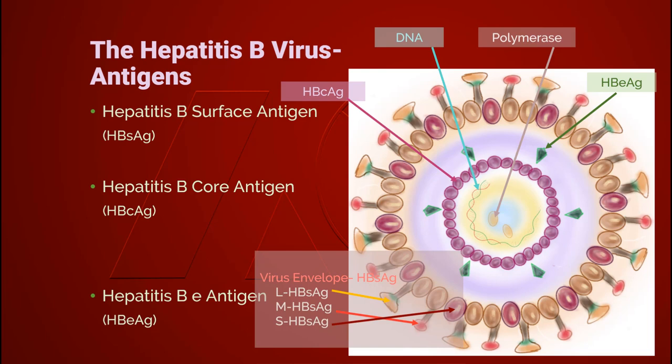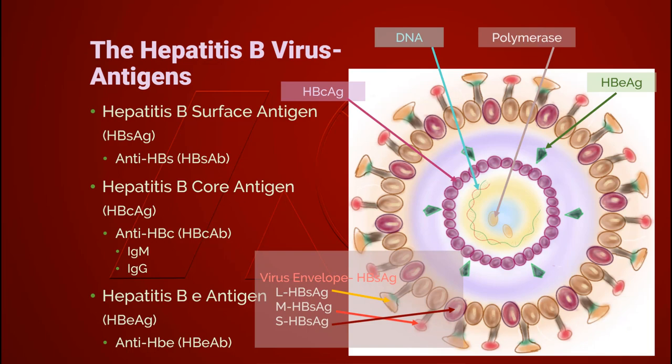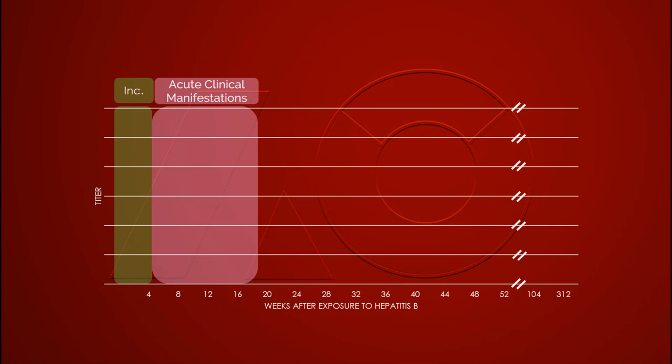Antibodies produced by the immune response against hepatitis B virus each target a specific antigen. Anti-hepatitis B surface antibody responds to hepatitis B surface antigen. Anti-hepatitis B core antibody responds to hepatitis B core antigen — in blood tests we can identify both IgM and IgG forms. Anti-hepatitis B e antibody responds to hepatitis B e antigen.